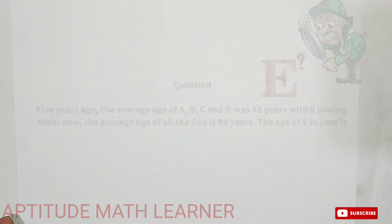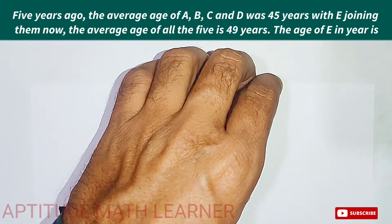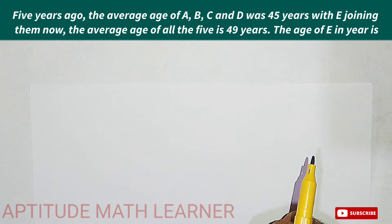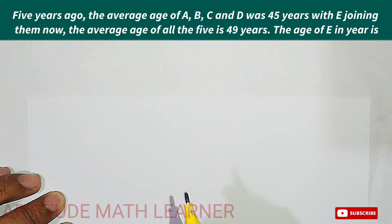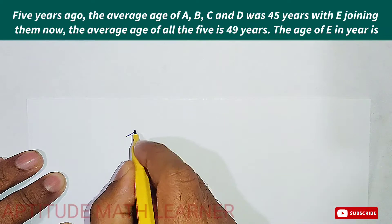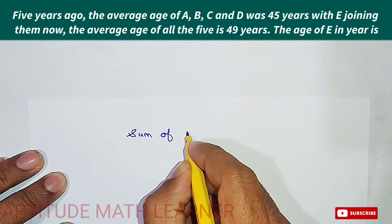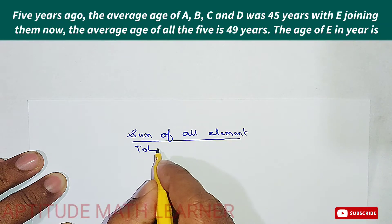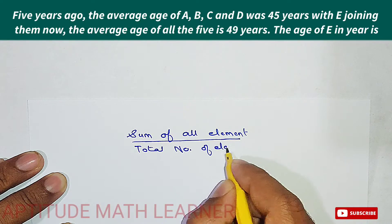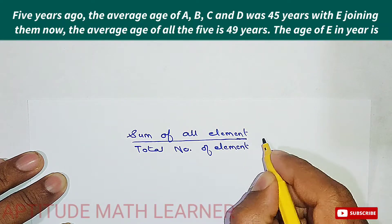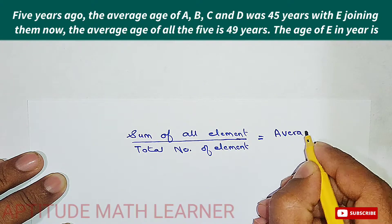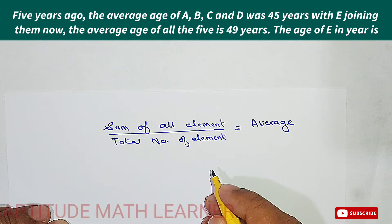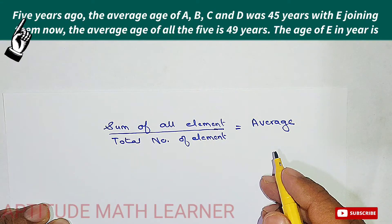Let's find out the age of E. We are given that the average age of A, B, C, and D was 45 years. Before starting, you must know the formula for average: Average equals the sum of all elements divided by the total number of elements. You need to understand and memorize this formula.